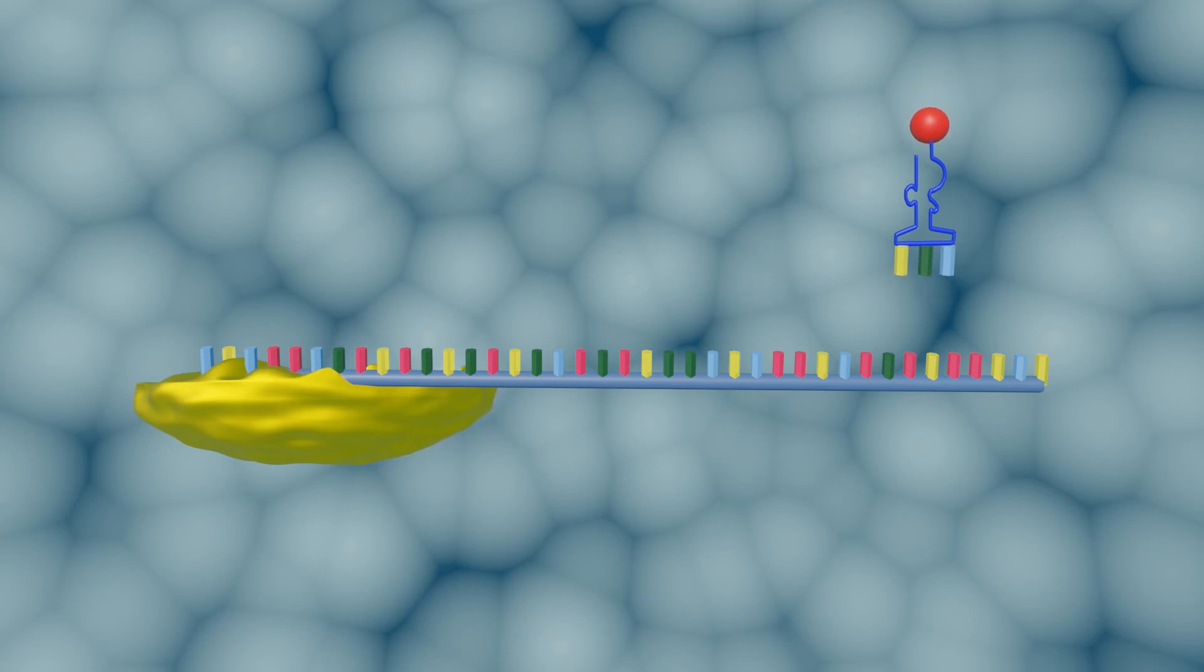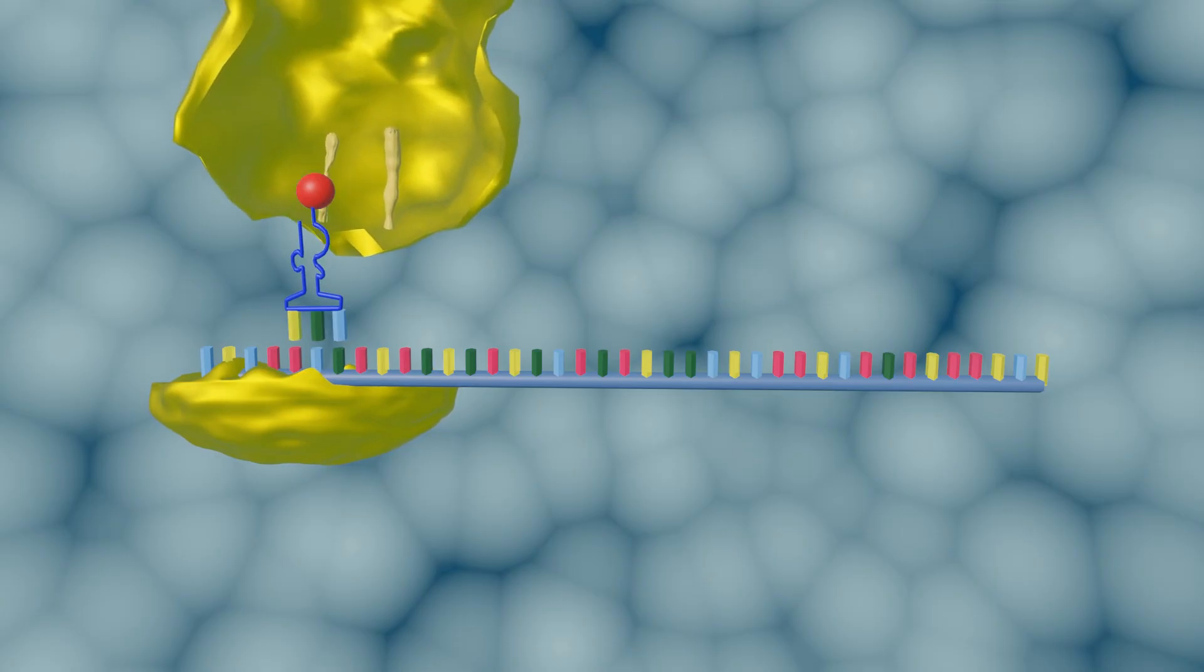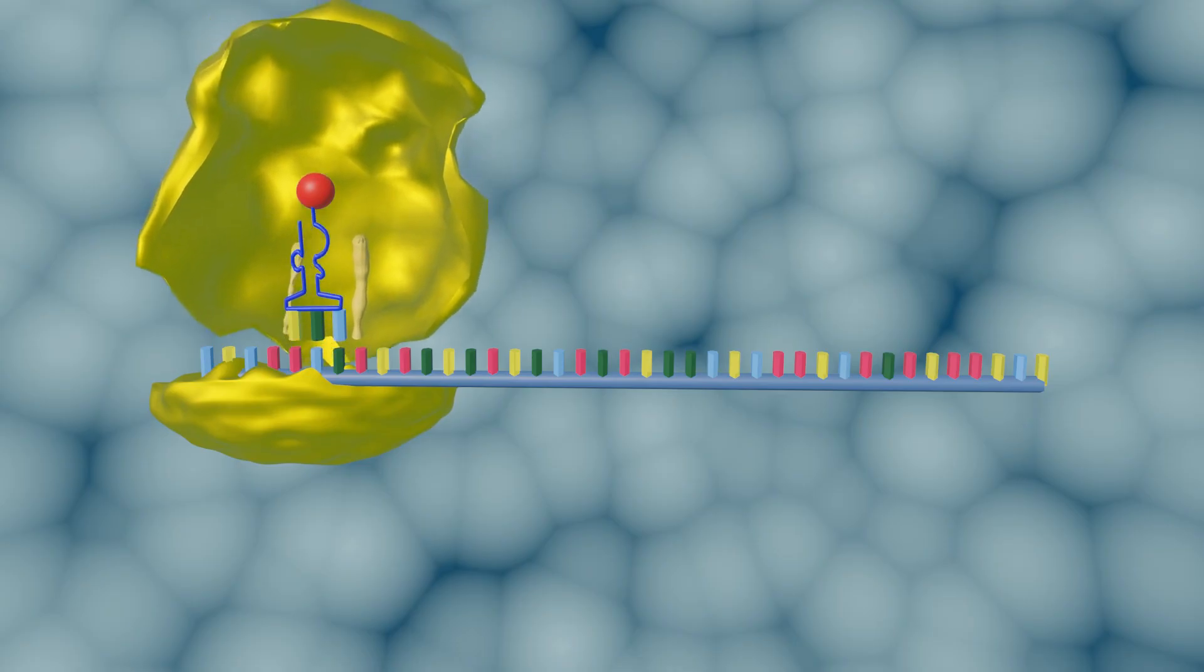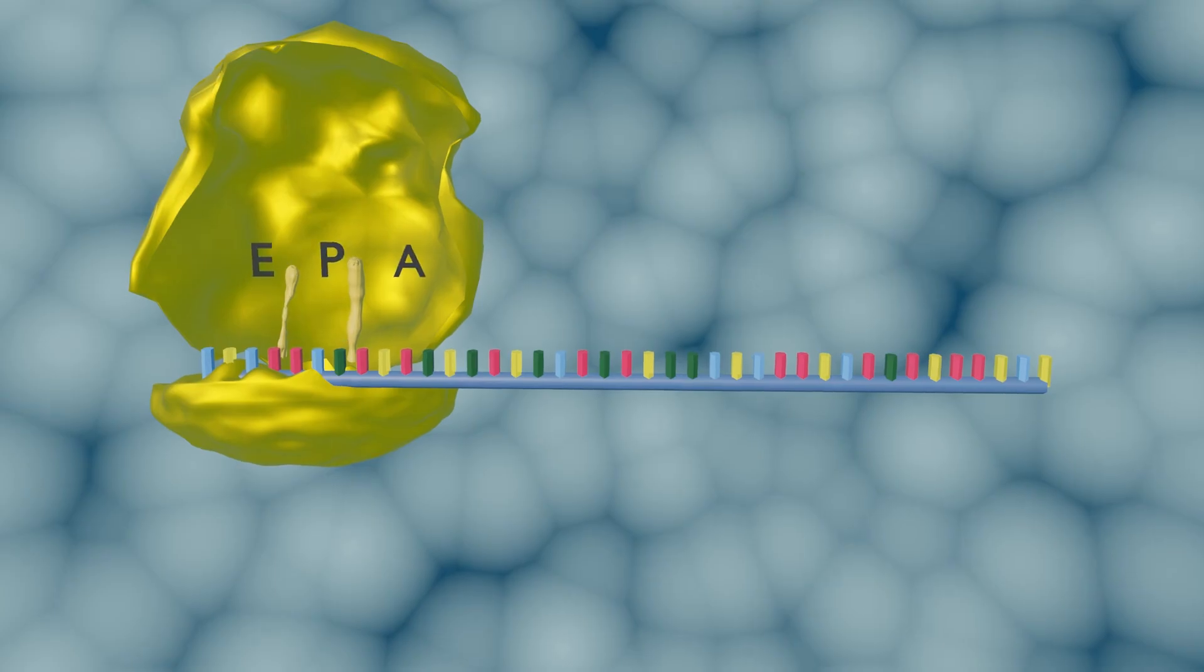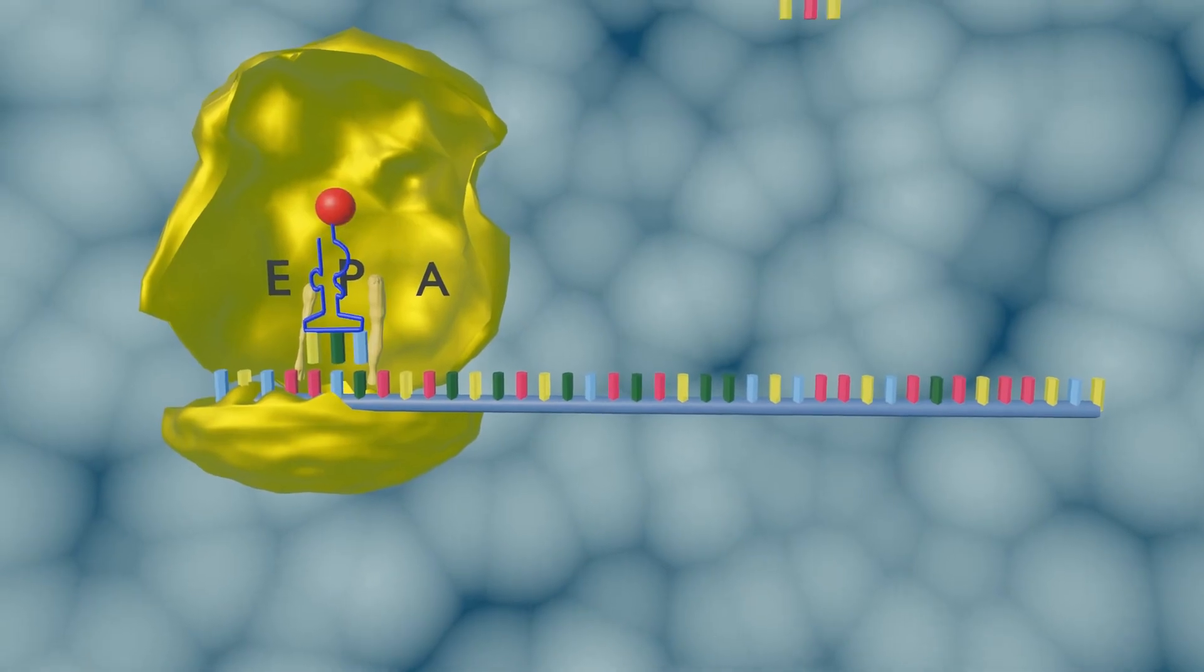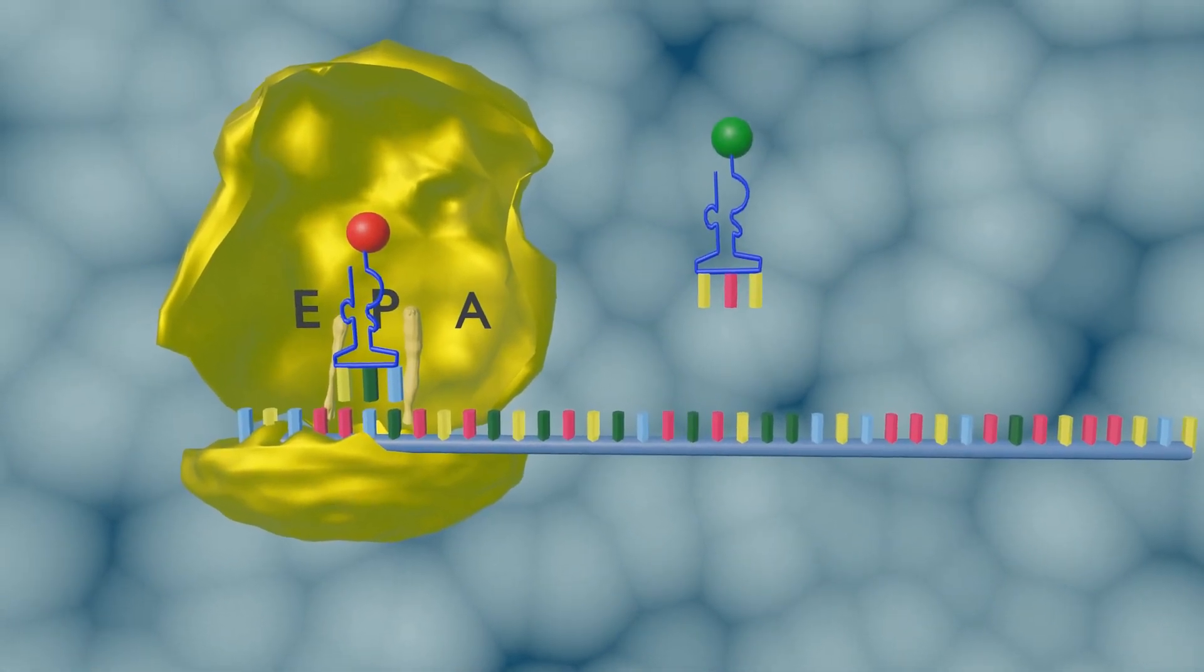In transfer RNA, complementary base pairs are known as anticodons, which determine the specific type of amino acid. Anticodons in transfer RNA bind with codons in messenger RNA. When the transfer RNA molecule binds with the start codon, then the large ribosomal subunit binds to form a translational complex. In the large ribosomal subunit, there are three distinct regions called E, P, and A sites.